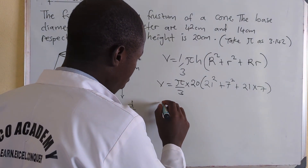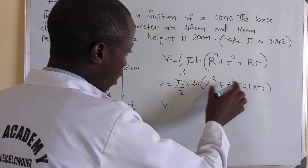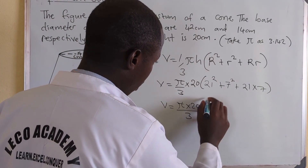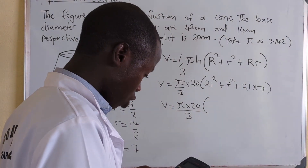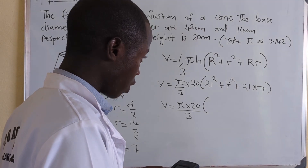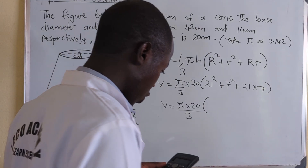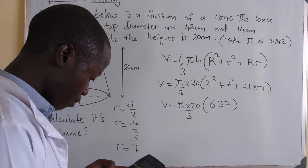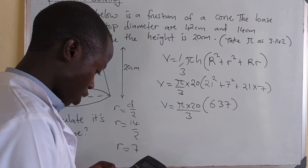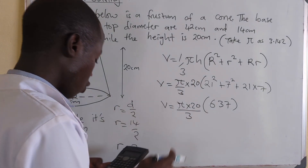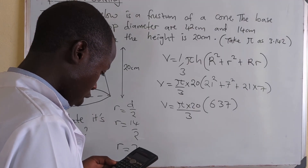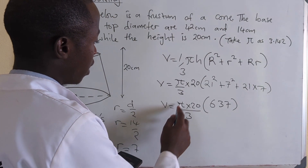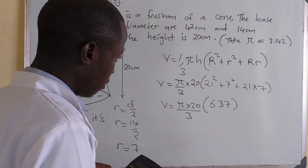We compute the bracket first: 21² + 7² + 21×7 = 441 + 49 + 147 = 637. Then we have π × 20 × 637, using π = 3.142. So this is 3.142 multiplied by 20, and then we divide by 3, then multiply by 637.